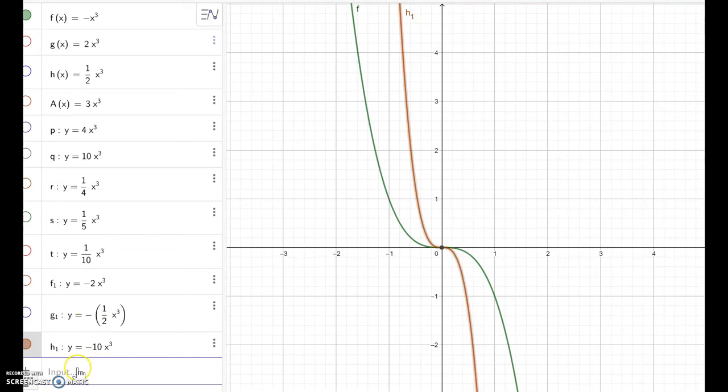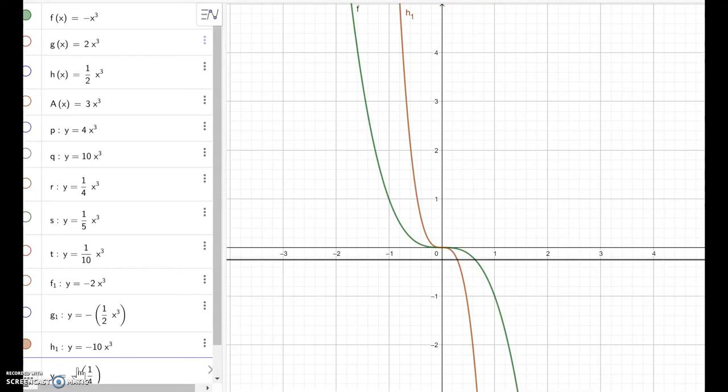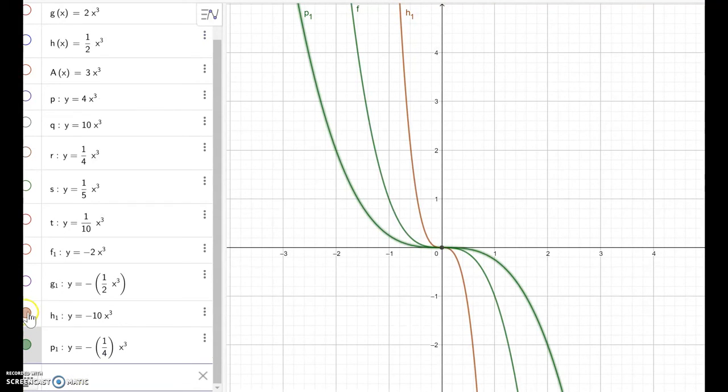On the other hand, if I make y equal to negative 1 over 4 x cube, then what happens? It goes wider here. Right?